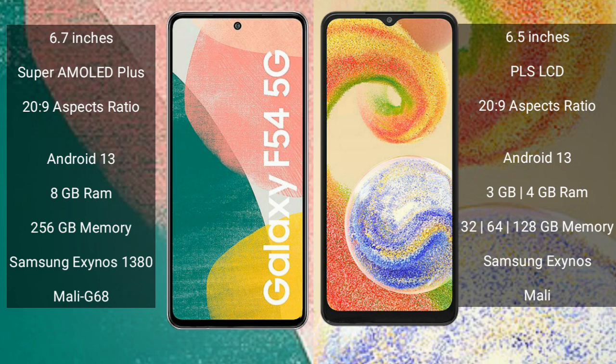Samsung Galaxy A54 runs on the Android 13 operating system, while Samsung Galaxy A4 runs on the Android 12 operating system. Samsung Galaxy A54 comes with 8GB RAM, 256GB internal storage, Samsung Exynos 1380 processor, and Mali G68 GPU.